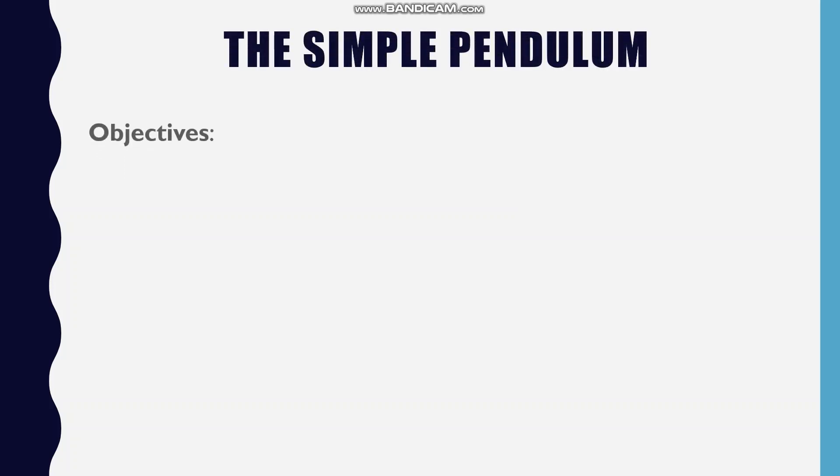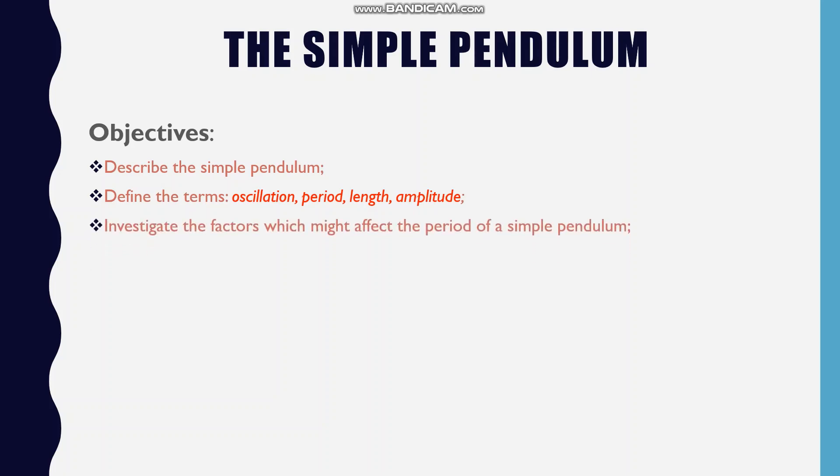The objectives for this lesson are: 1. Describe the simple pendulum. 2. Define the terms oscillation, period, length, and amplitude. 3. Investigate the factors which might affect the period of a simple pendulum. 4. Use graphs of experimental data from simple pendulum.